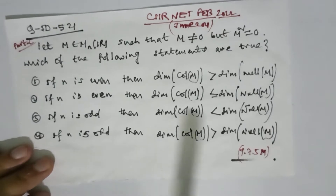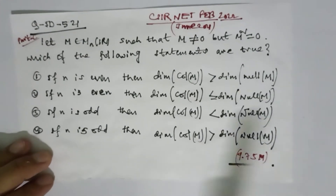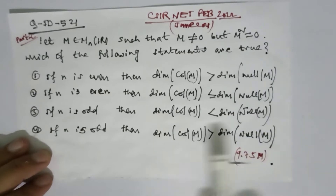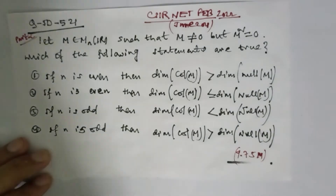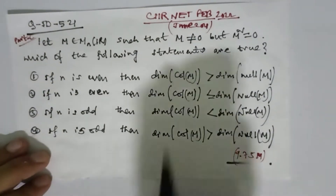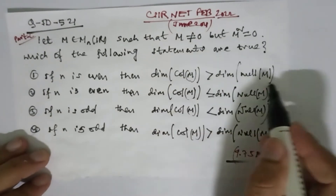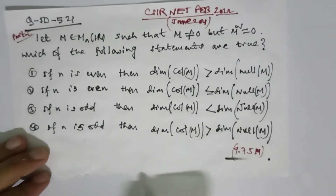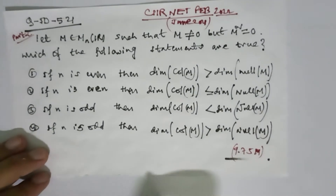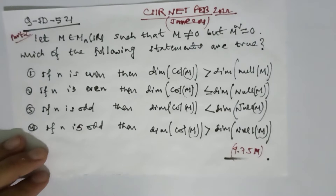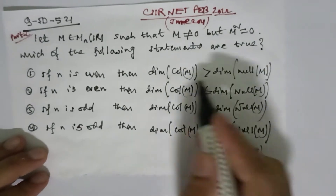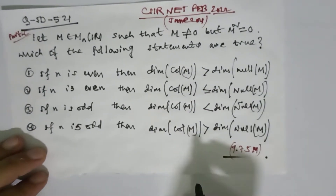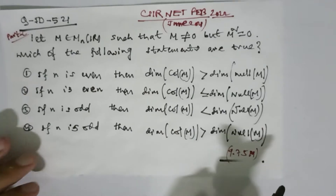This question is all about column space, dimension, null space. We have to know what is column space and what is null space. I am first giving an introduction and concept about column space, null space, row space, and dimension. After that we are going to solve this question.